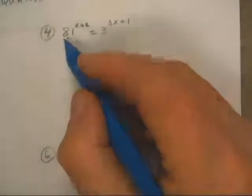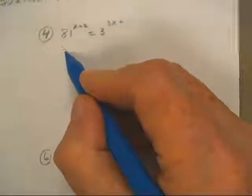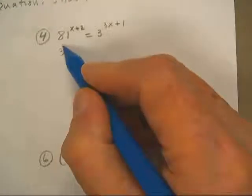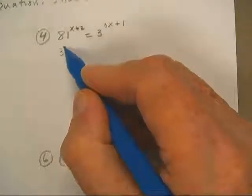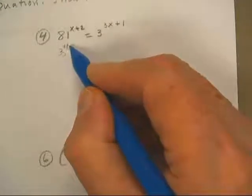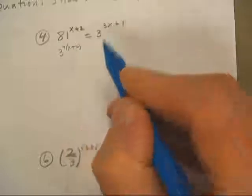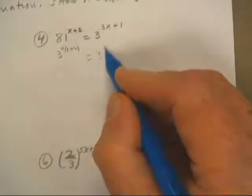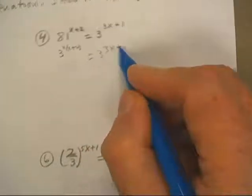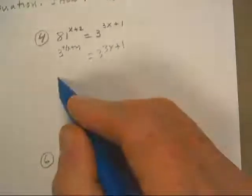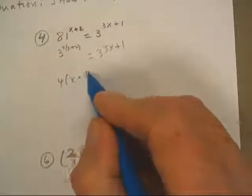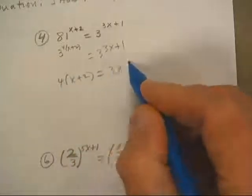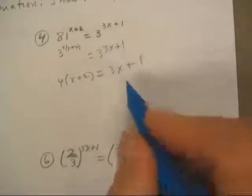Welcome back. 81 is 9 times 9. Each 9 is a pair of 3's, so you're going to get that on that side, and you're going to get 3 to 3x plus 1 on this side. So 4 times x plus 2 equals 3x plus 1.